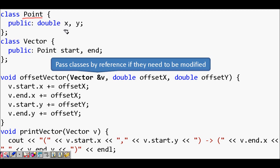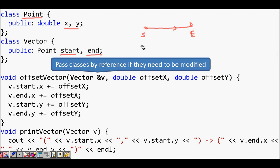We have a class Point where a point is defined by an X coordinate and a Y coordinate. It has two public attributes: double X and Y. Then we have a class Vector, which consists of two points — point start and point end. Now, we want a method that applies an offset to a point, so X becomes X plus delta X, and Y becomes Y plus delta Y.